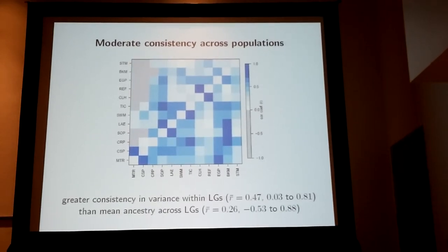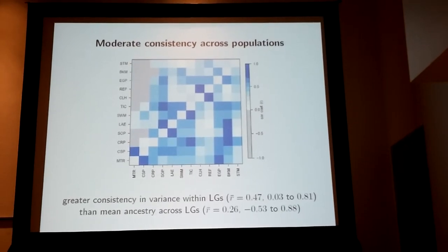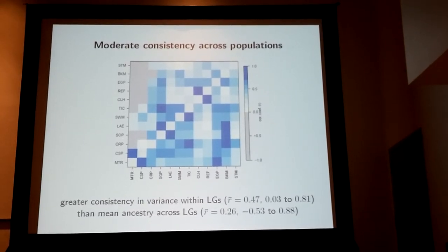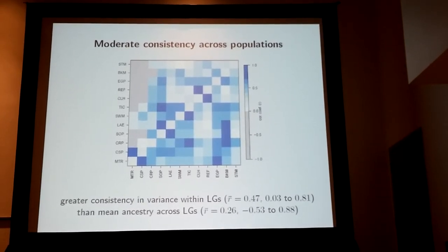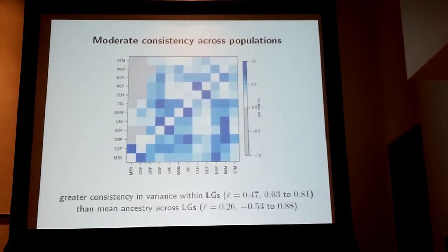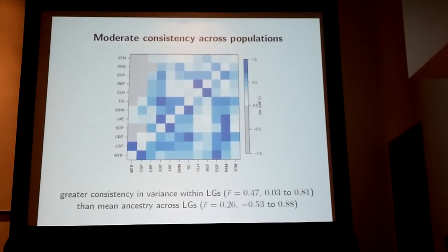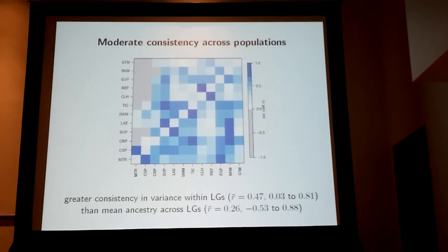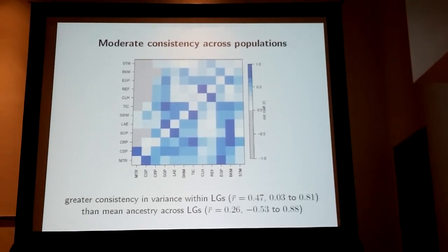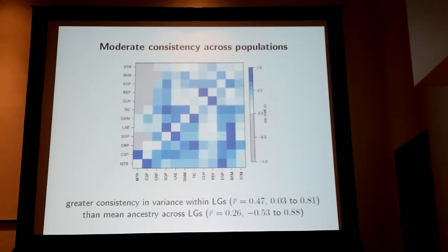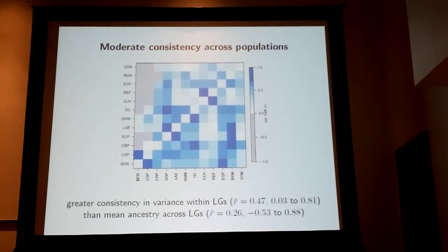If you look at the level of full chromosomes, you actually see less overall consistency. Here are correlations in average ancestry at the chromosome level between all 12 pairs of populations on the upper triangle, and you actually see some negative correlations, as indicated by the gray dots, typically involving two particular populations. Instead, if you think about the variance in ancestry along a chromosome — how variable ancestry is along a chromosome — we actually see greater consistency and higher correlations. So some chromosomes show more variation in ancestry in one population than others.